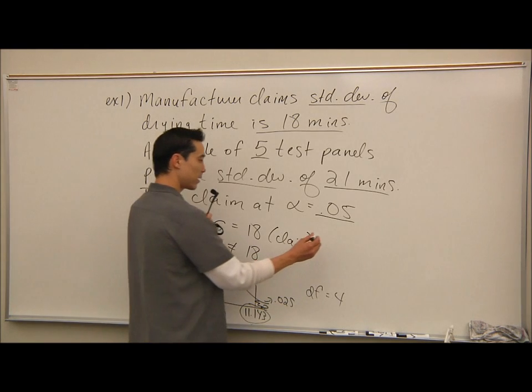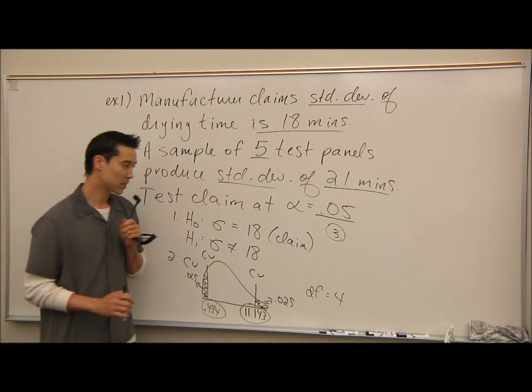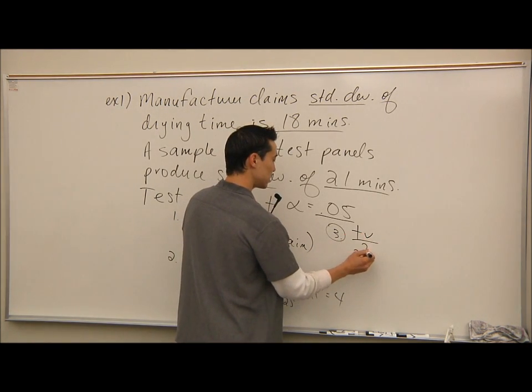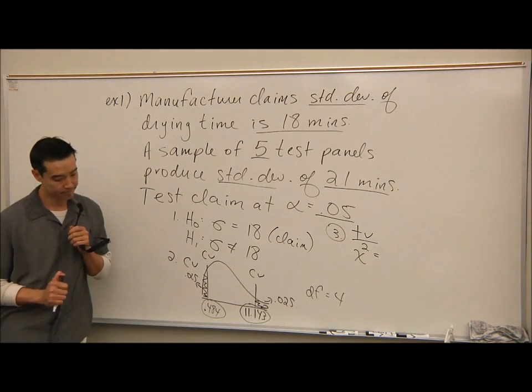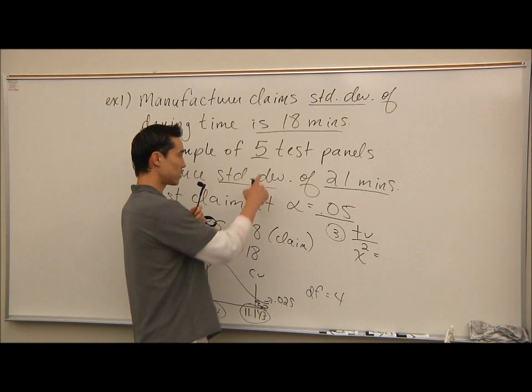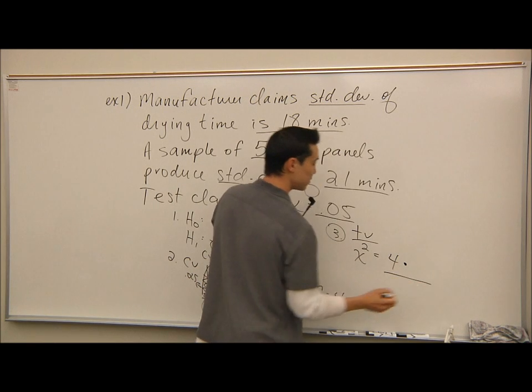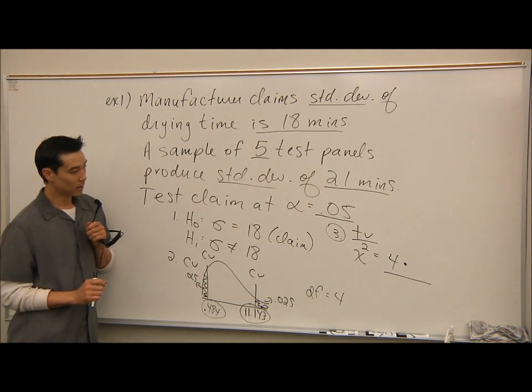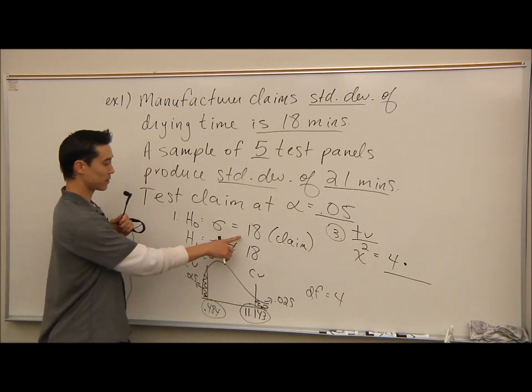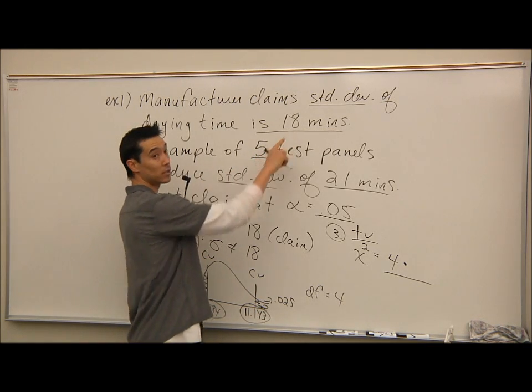Alright, let's move on to step 3, the test value. One thing that was good about this test is the test value wasn't too bad, right? What was the test value? Chi-square equals n minus 1. So 5 minus 1, that is 4. Then times... What was the next piece? Variance.